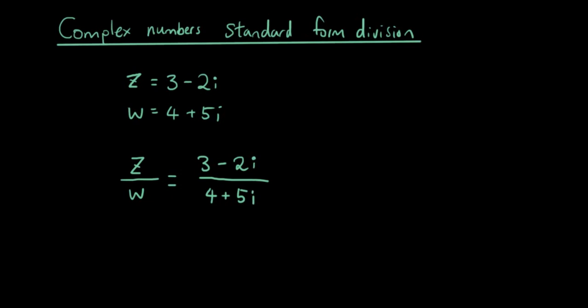However, if we were going to draw this on our Argand diagram, there would be no way for us to draw it. Because what we want to do is to be able to express this complex number in the form of a plus bi, so we know what the real part is and we know what the imaginary part is. So then we can draw it on our Argand diagram. But how do we do that?